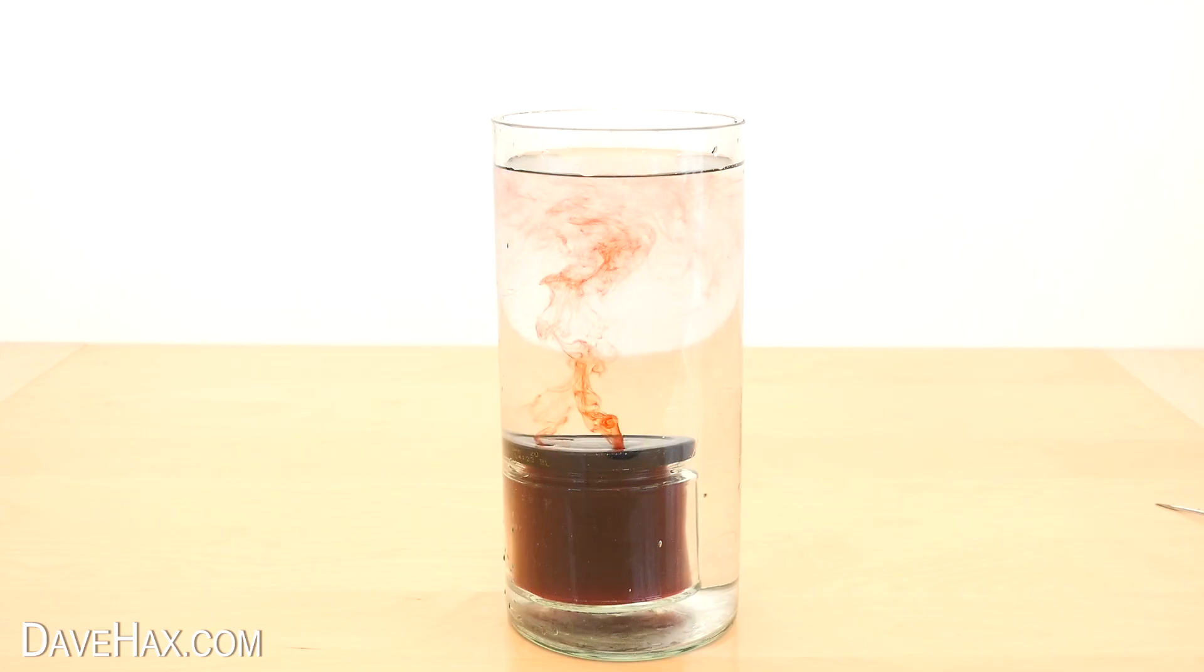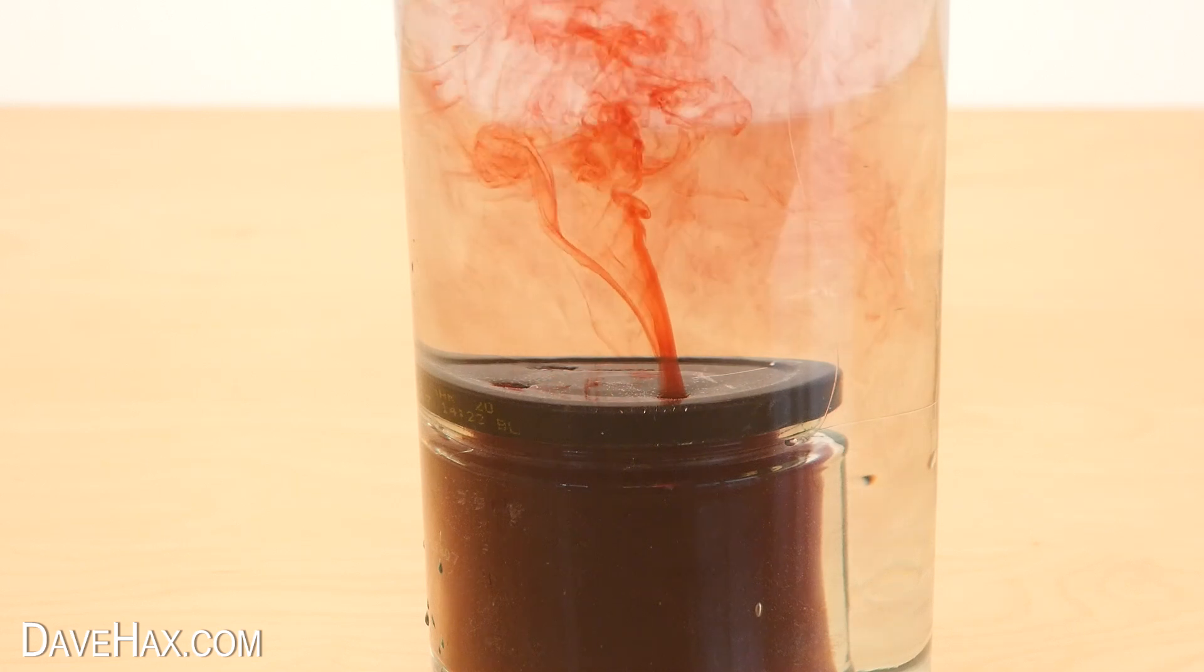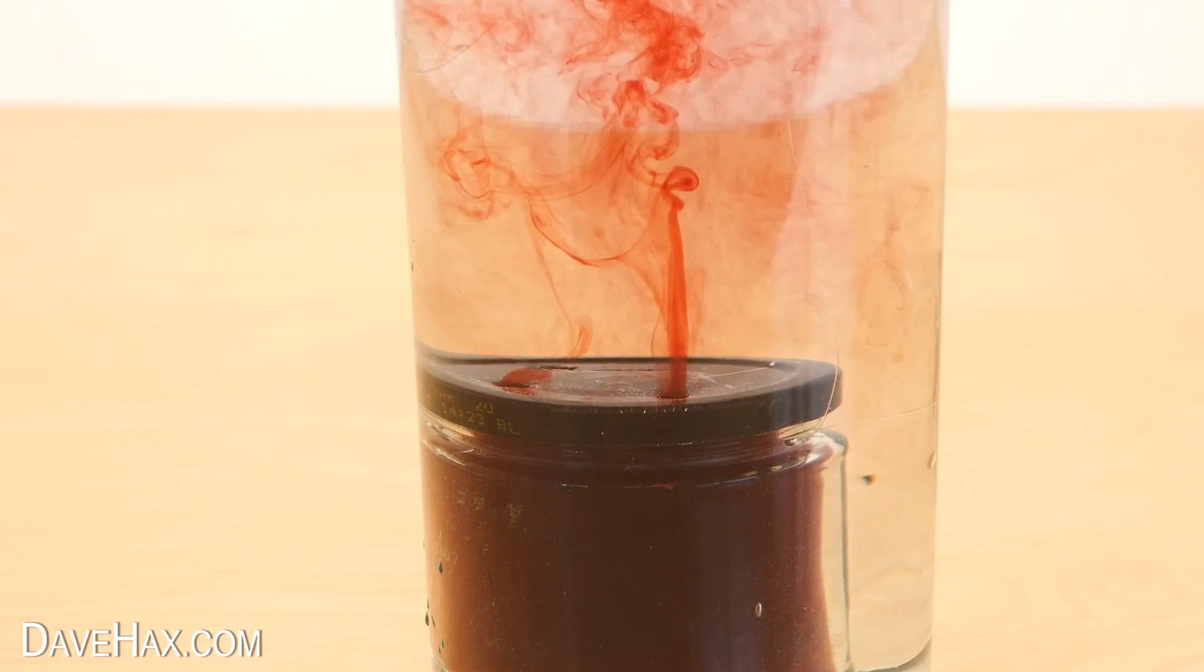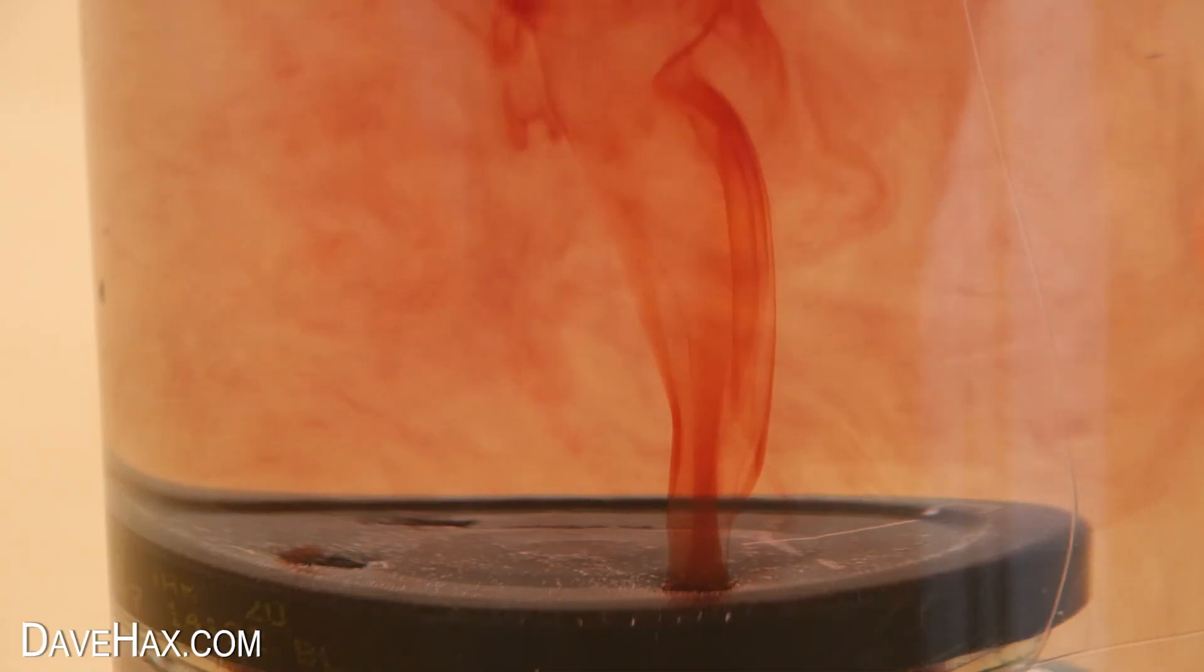It's predominantly coming out of one hole with a little trickle out of the other. I think the hole at the back is allowing cold water into the jar to replenish the escaping hot water. It's circulating through the jar and it looks great.